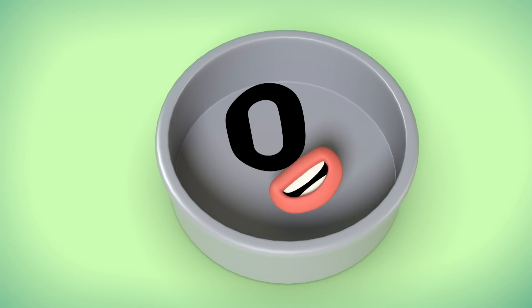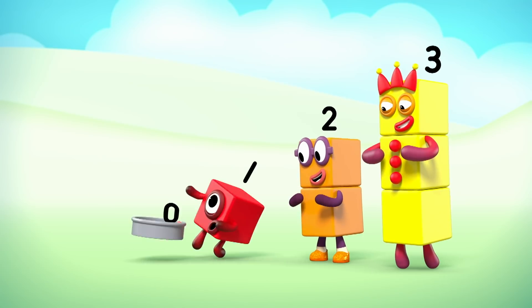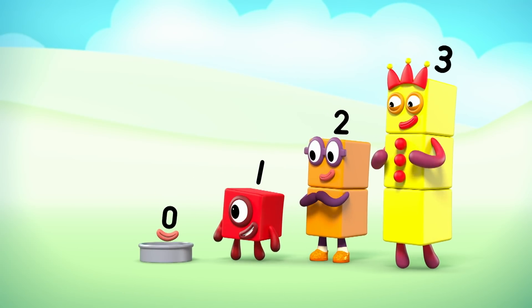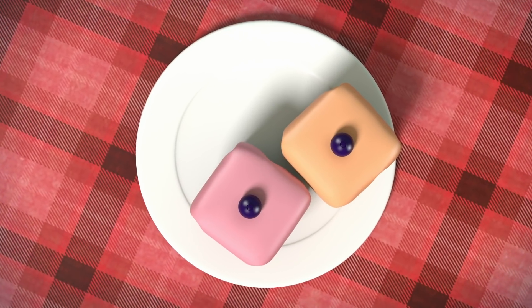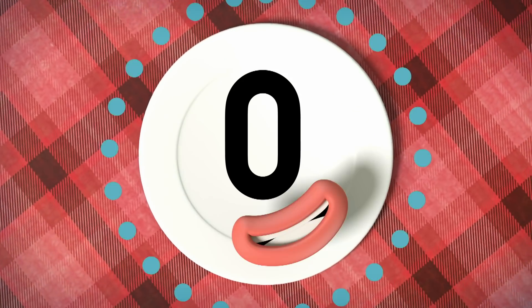I'm the number for nothing. I'm one less than one. When there's nothing of something, I'm the number for none. When there's nothing there to count, none is the amount. You've got zero.